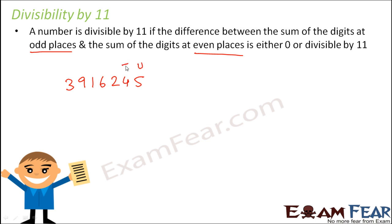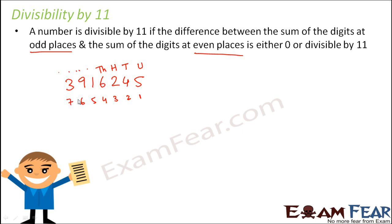You will start positioning the digits from your right-hand side, that is from the units place. So this is units place, this is tens place, this is hundreds place, thousands place and so on. You will always start numbering the position of the digits from the units place. So position 1, position 2, position 3, position 4, 5, 6, 7 — this is a 7-digit number and you have 7 positions.